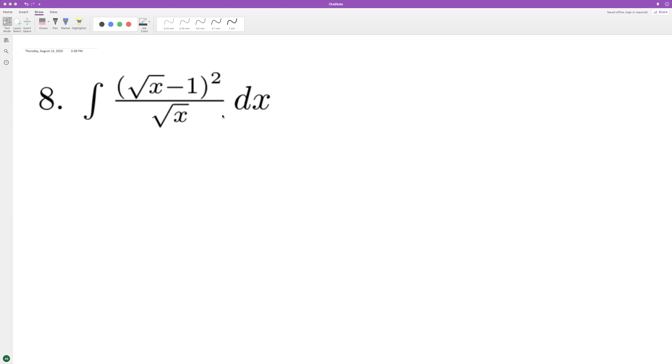What we'll do here is rewrite this as the integral of x raised to negative 1/2 times the square root of x minus 1 squared. We'll set u equal to square root of x minus 1, and du is going to be equal to 1/2 x raised to negative 1/2.